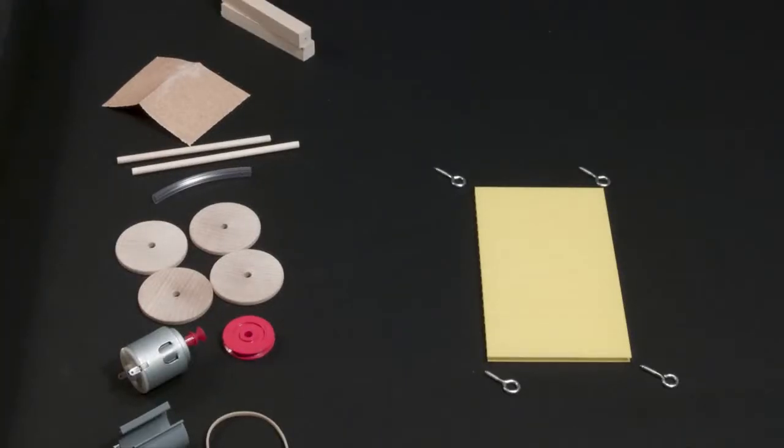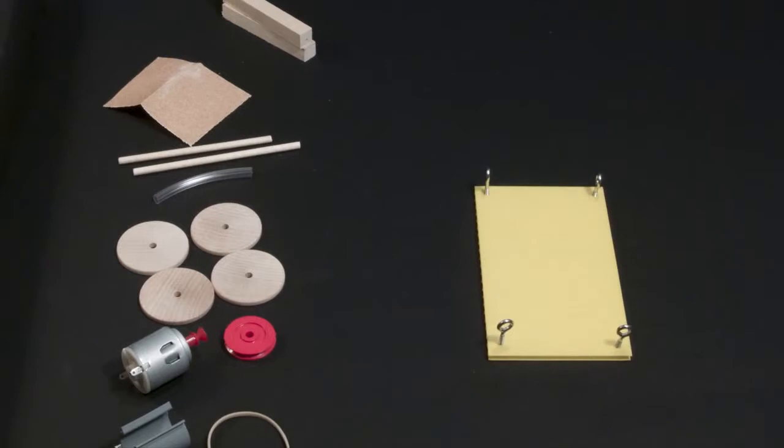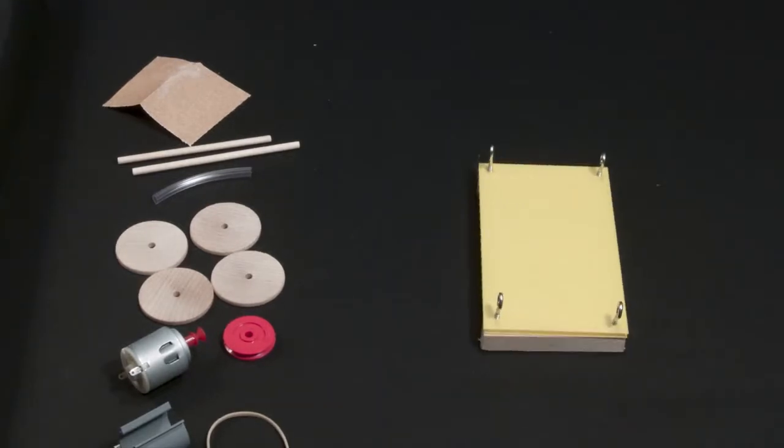Twist the screw eyes through the coroplast and into the wooden blocks. Make sure that the eye of the screws are all sideways.